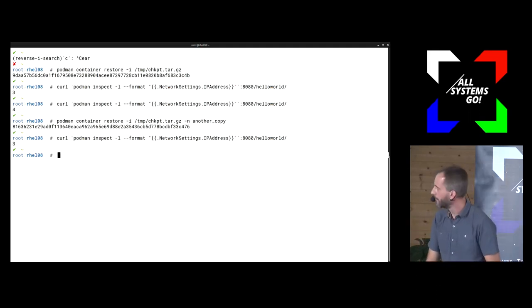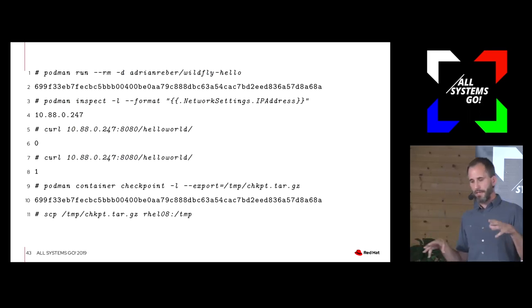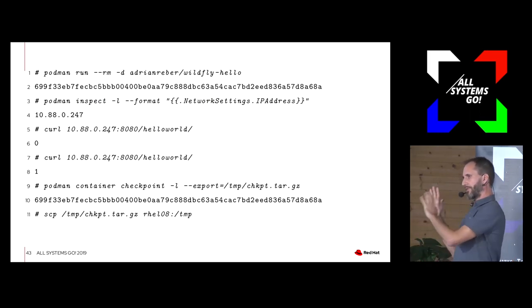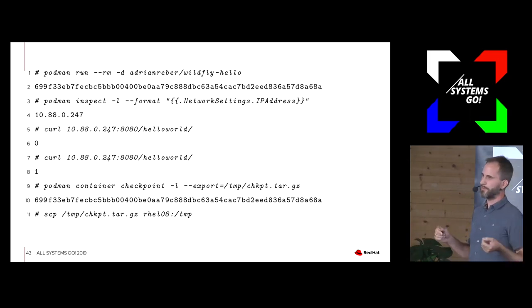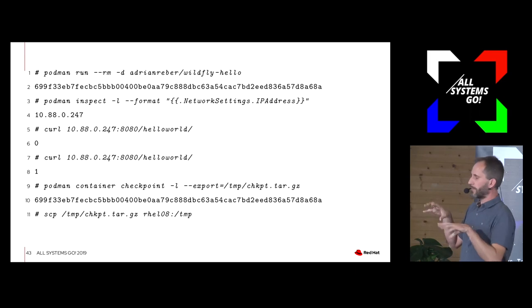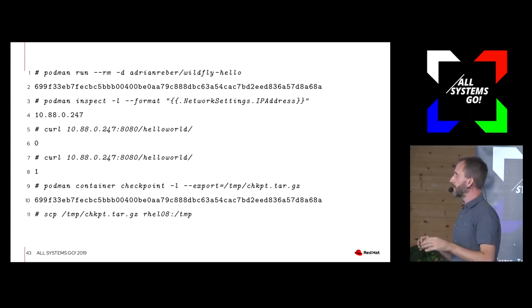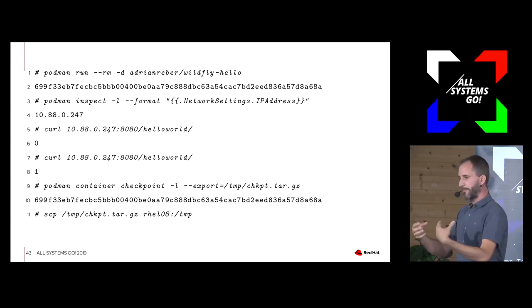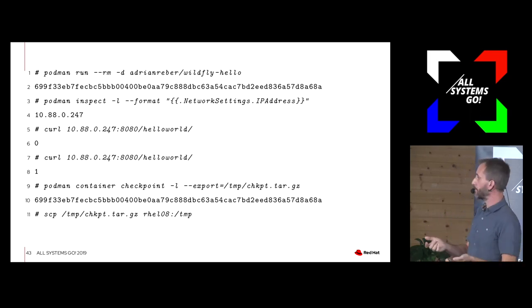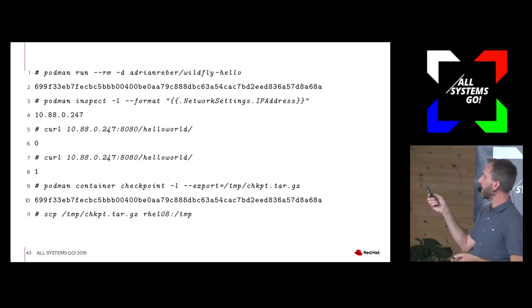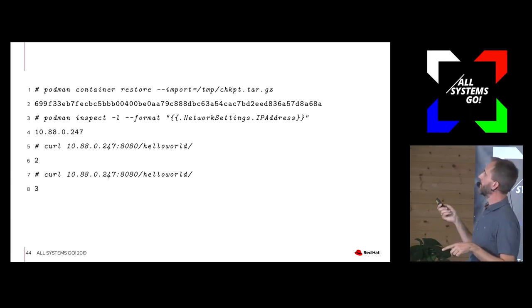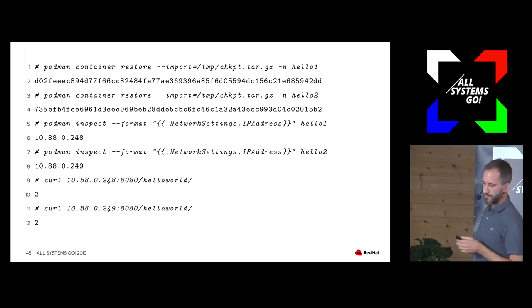Another interesting thing about this feature: you cannot only live migrate containers, but in my case with the Java application server, it takes around 8 seconds to start up and be able to answer requests, but only around 4 seconds to restore from the checkpoint. So in this simple example, I can improve startup time by around 50% — by not having Java do all its initialization, but by restarting from the checkpoint which already has all libraries loaded as Java wants them. The slides show the example written out, the same as what I just demonstrated.